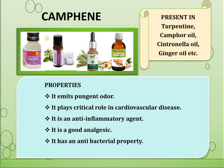Let us look into some examples of terpenes in detail. First, we consider camphene. It is a plant-derived monoterpene and a minor component of many essential oils such as turpentine, camphor oil, citronella oil and ginger oil. It emits a pungent odor, so it can be used as a mosquito repellent by soaking a bit of cloth in camphor oil and leaving it in the corners of the house.